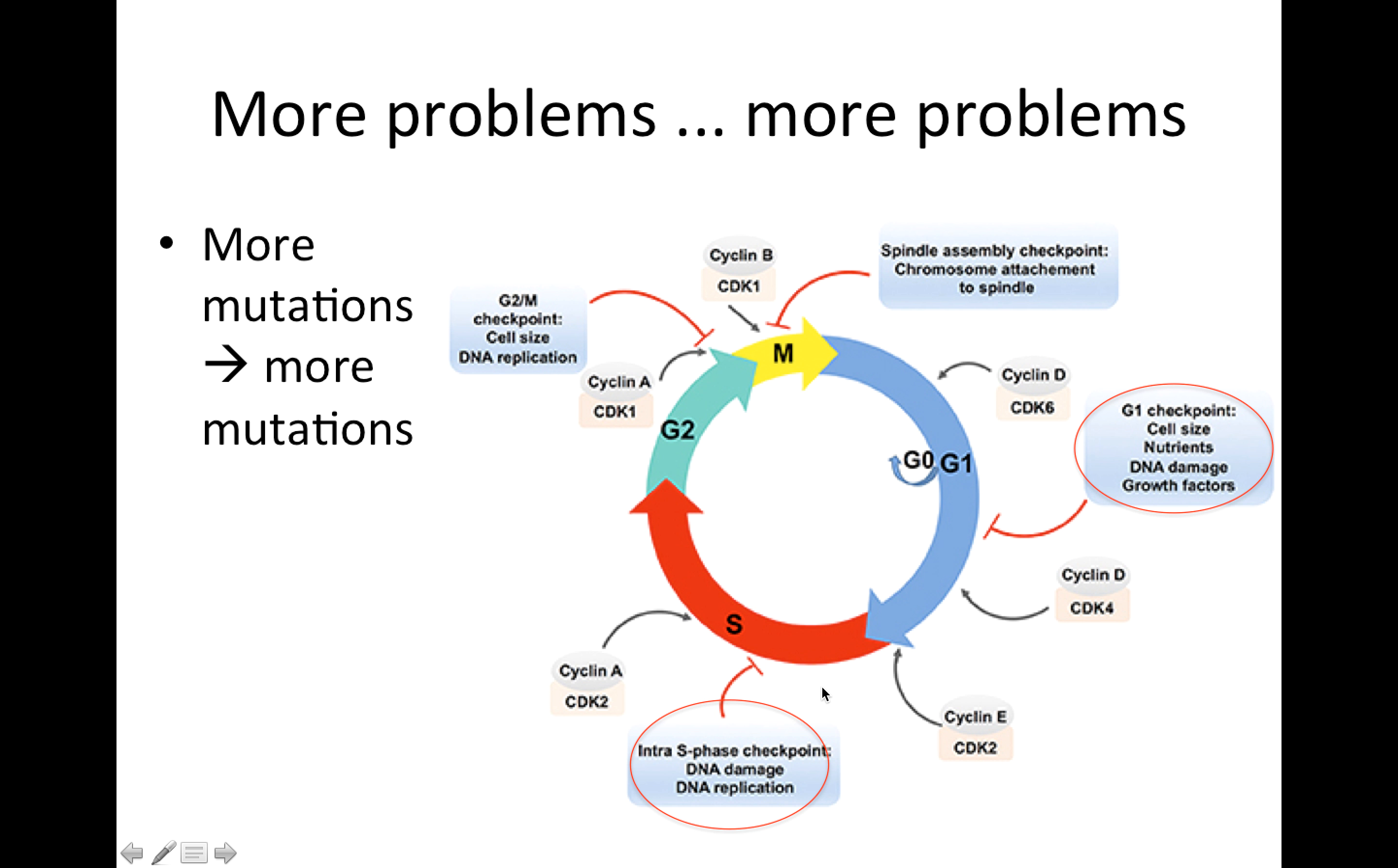So a lot of what will get mutated in cancers are the proteins that are involved in these checkpoints. And so here, for instance, if we lose the genes that are involved in checking for DNA damage, well then we can exit S phase and continue into cell division with damaged DNA. So our first mutations can lead to even more mutations.